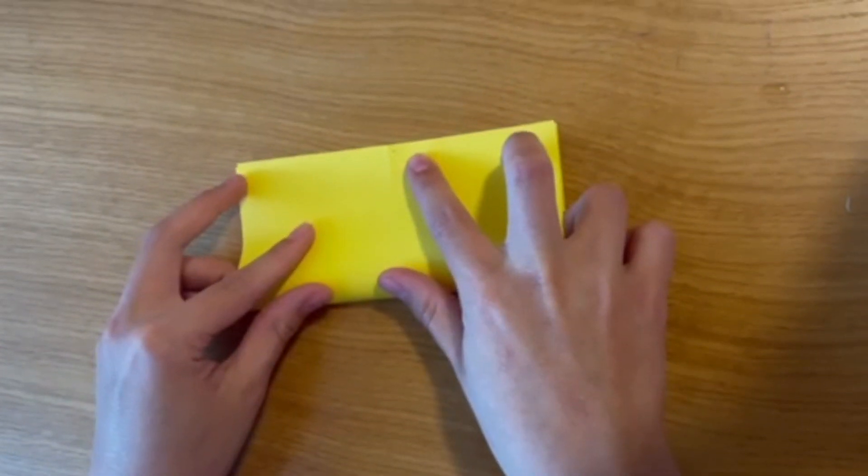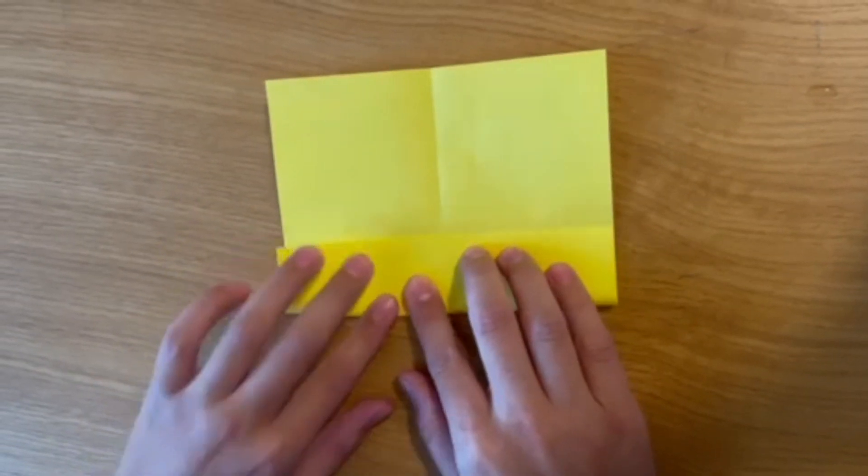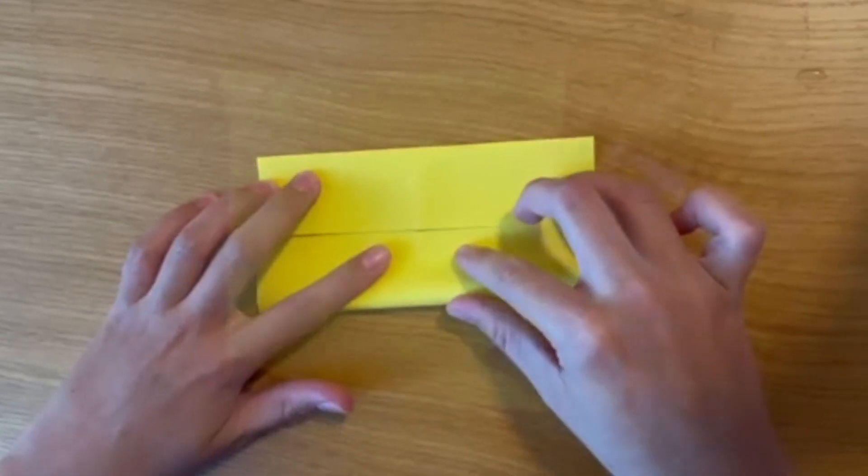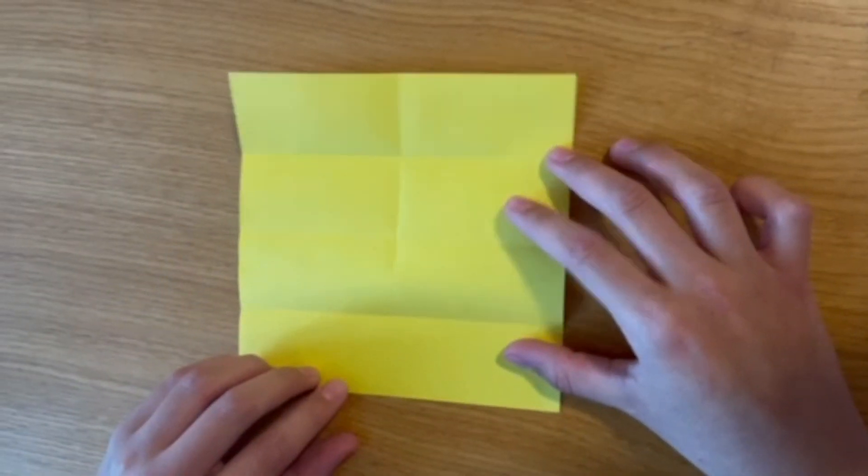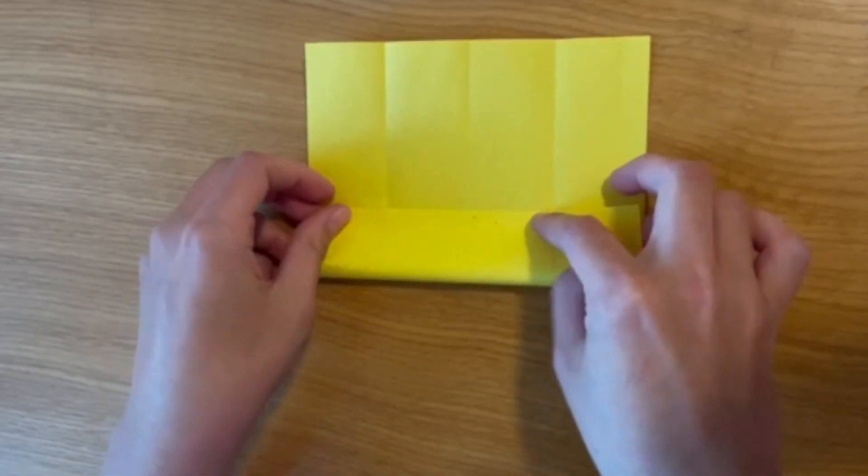We're going to do it on the other side as well. Now we're going to open up our paper again and then turn it the other way and fold to the middle line on the other side. You're going to do this to both sides. Next you're going to open it up again.